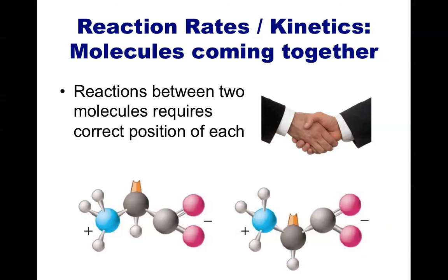Let's imagine a room with two blindfolded people. These people and their behavior will represent our two molecules. They will have to put out one arm and walk around the room randomly trying to get a handshake from the other person. The handshake is the reaction in which the two molecules combine. It could take them a long time to find each other through random motion in the correct orientation to successfully shake hands.